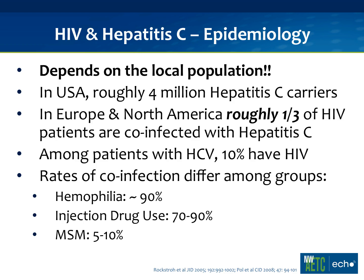Regarding HIV and hepatitis C co-infection, it really depends on your local population. At the Madison Clinic here in Seattle, around 21% of patients also have hepatitis C. In Europe and North America it's a little bit higher — maybe one-third. Looking at the flip side, of patients who have hepatitis C, 10% have HIV. The standard thing we do in the hepatitis liver clinic is to test everyone for HIV — I've picked up at least three or four cases of HIV that way.